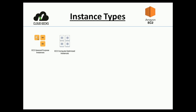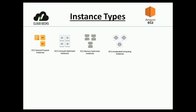The second one is the compute optimized instance. As the name suggests, it is very powerful in terms of vCPU core utilization. If you are executing a compute-intensive application, you should go with the EC2 compute optimized instance. The third one is memory optimized — if you have an application working with Memcached or Redis where you need to store data on a large scale in memory, you should go with the EC2 memory optimized instance type.